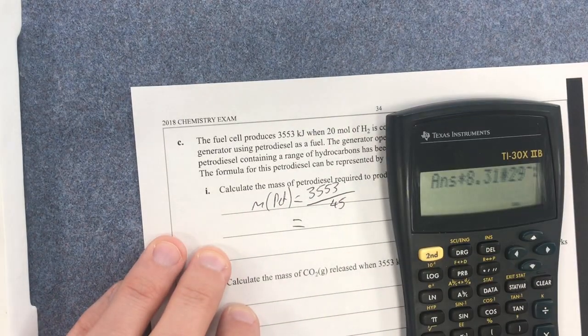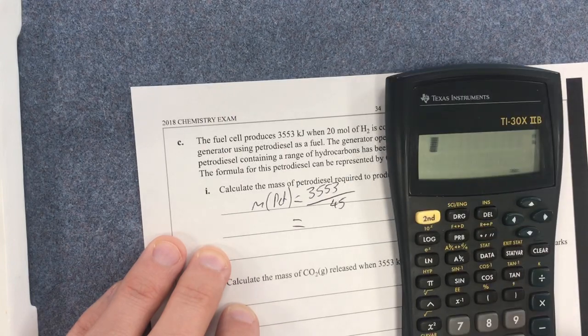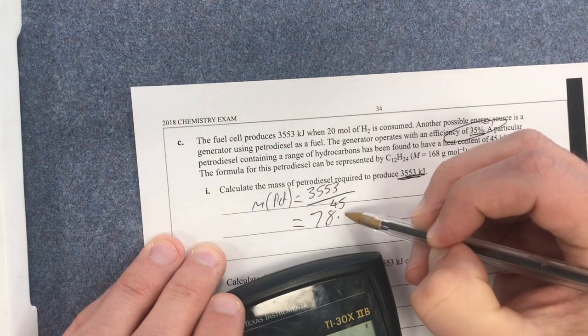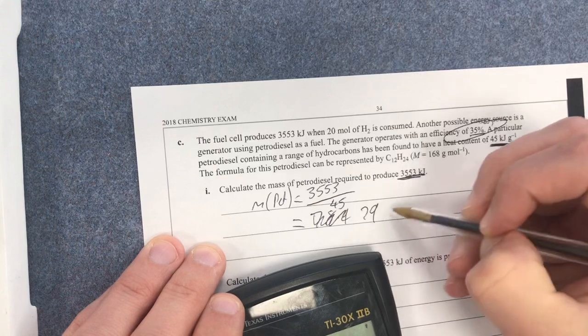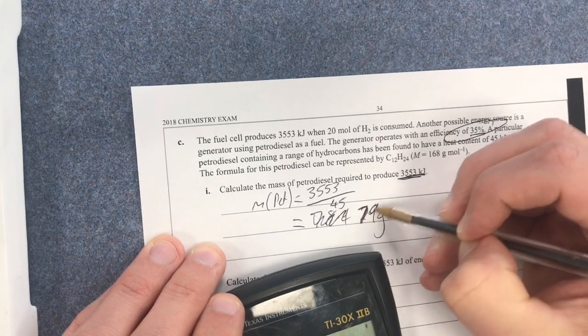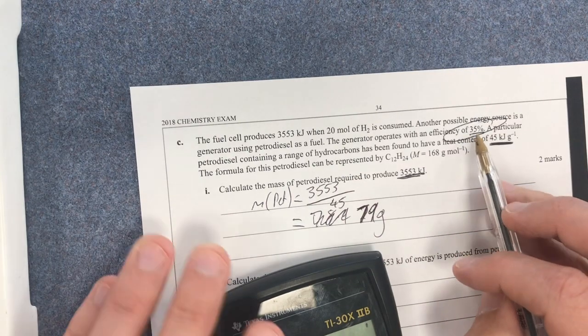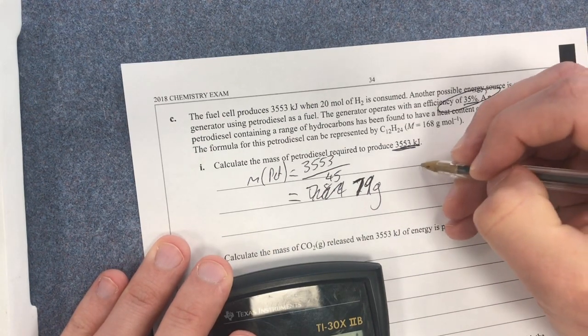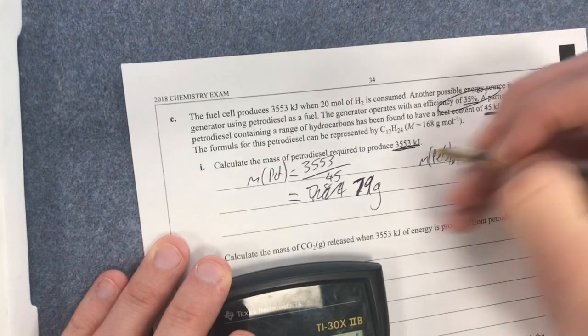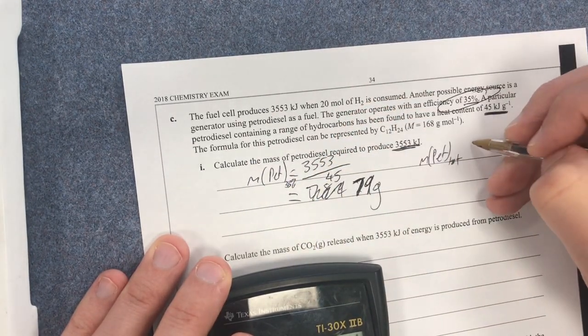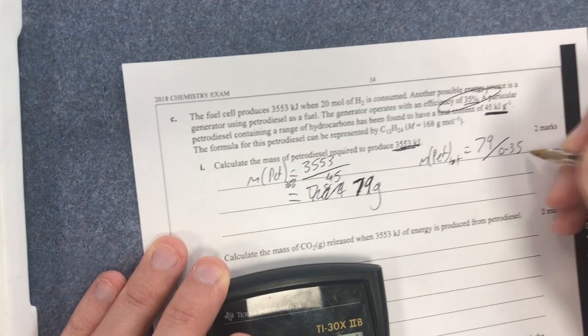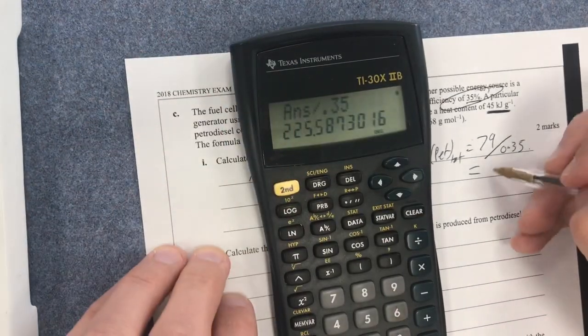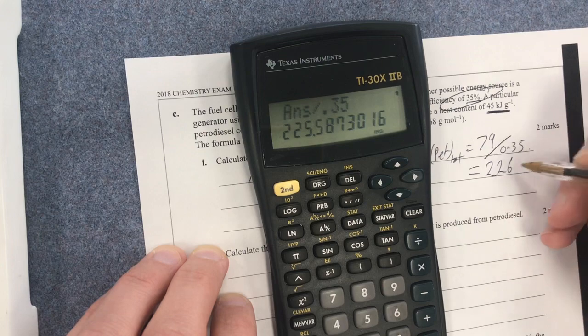So if I want to produce that much energy, my heat of combustion is this. So therefore, I simply divide that by how many is per gram. So my mass of petrodiesel equals 3553 divided by 45. So this is, if it was going to be 100% conversion, 3553 divided by 45 gives me 79 grams. Now, that is only 35% of what actually would be required. So therefore, factoring in my 35%, I'll then say my mass of petrodiesel in total is going to be 79 divided by 0.35. So therefore, that will be equal to 226 grams.